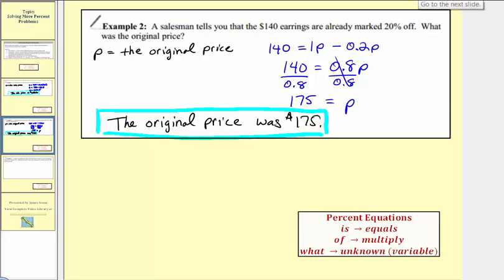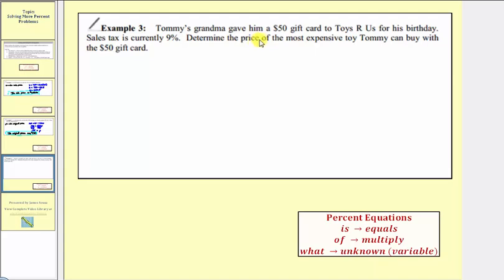Let's look at one more example. Tommy's grandma gave him a $50 gift card to Toys R Us for his birthday. Sales tax is currently 9%. Determine the price of the most expensive toy Tommy can buy with the $50 gift card. Now for this example, the unknown is the price of the most expensive toy that Tommy can buy. So let's define our variable as p equals the price.